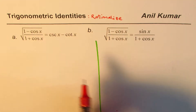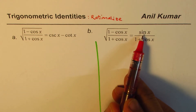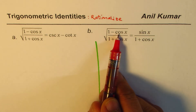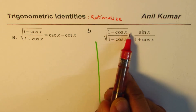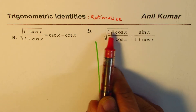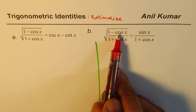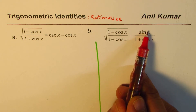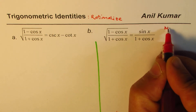Now, rationalize numerator or denominator? That is a big question. In Part B, we have sin x in the numerator — we want one sin x — so we should rationalize the numerator. If I multiply by 1 plus cos x, I may get 1 minus cos squared x, which is sin squared x. So I get sin in the numerator, meaning we should rationalize the numerator in that case.